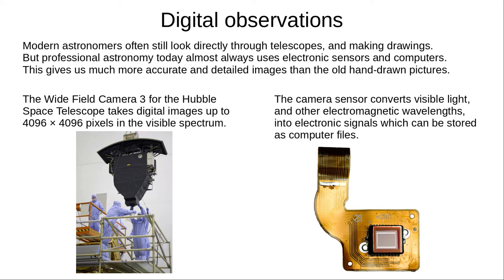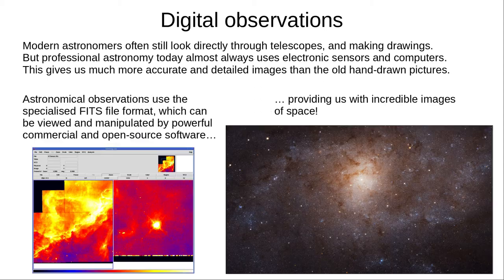Light enters the telescope and is focused onto a camera sensor, like a digital camera CCD, but much more sophisticated. The sensor converts visible light and other electromagnetic wavelengths into electronic signals, which are processed and stored as computer files. Modern astronomy uses FITS files, a specialised file format. You need specialised software to interpret these files, but when you do, the result is amazing images of space.